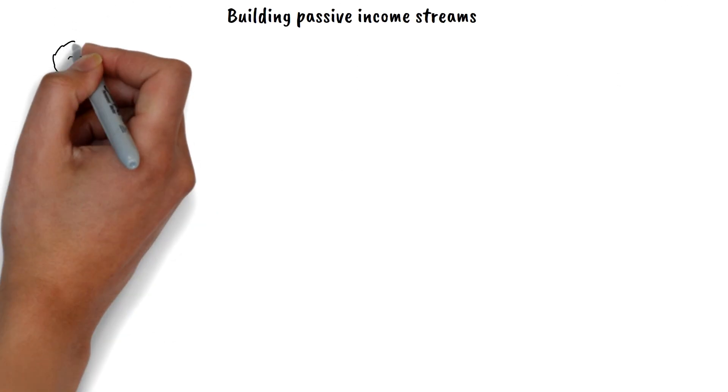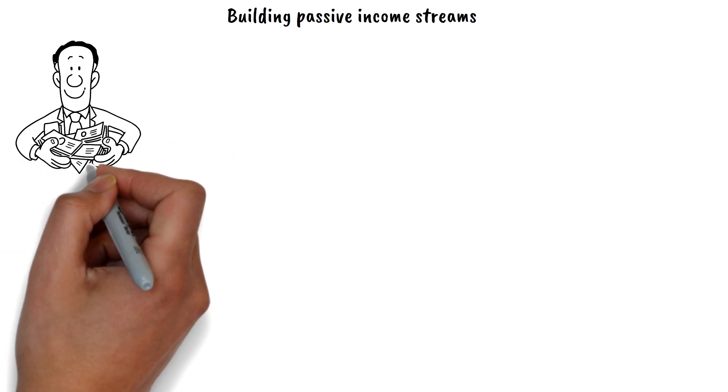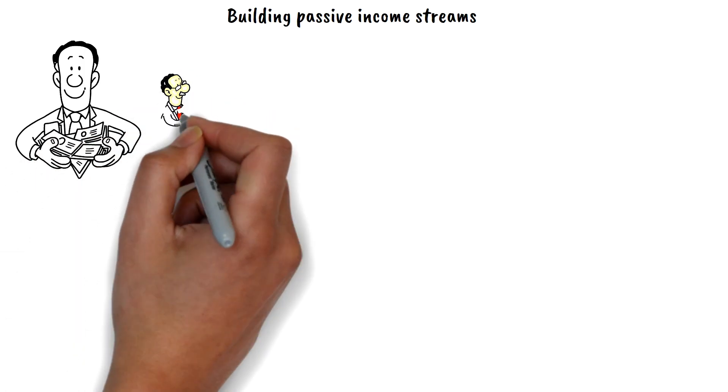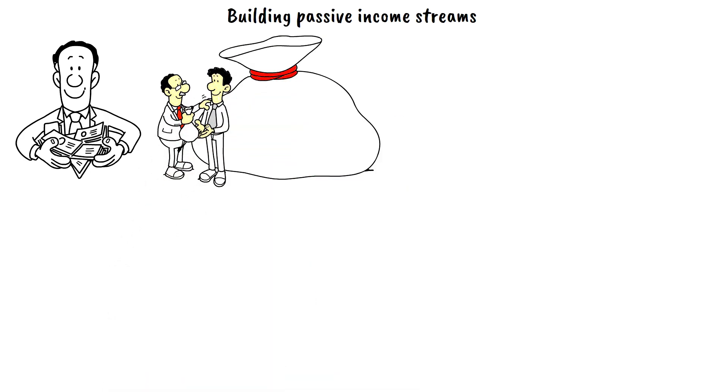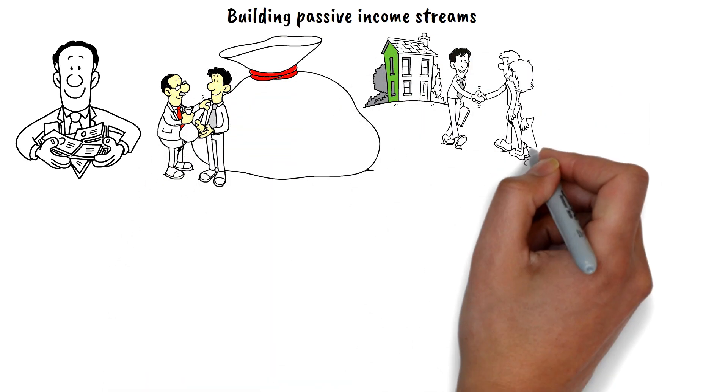Building Passive Income Streams. Finally, building passive income streams is another way to build wealth over time. Passive income is money that you earn without actively working for it. This can include rental income,